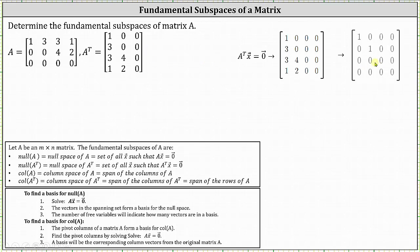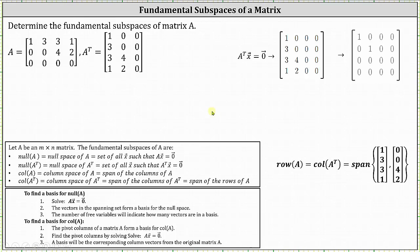The augmented matrix is a four by four matrix, where the fourth column is a column of zeros from the zero vector on the right side of the equation. Looking at the augmented matrix in reduced echelon form, notice how we have pivots in column one and column two. This means column one and column two of A transpose form a basis for the column space of A transpose, which would be the vectors (1, 3, 3, 1) and (0, 0, 4, 2). Therefore, the column space of A transpose, or the row space of A, is equal to the span of these two vectors.